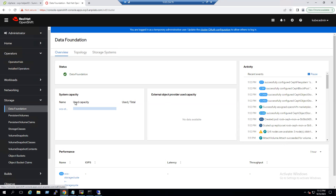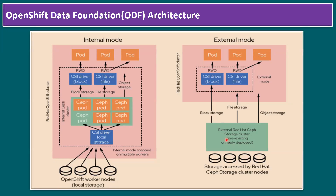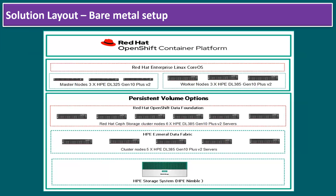This is the internal mode configuration — not external mode, since we do not have a separate console. In our later session, I will show how to deploy ODF in external mode. For production environments, Red Hat recommends using bare metal or physical servers. If you see a sample reference architecture, it is a completely bare metal setup within Red Hat OpenShift Container Platform, running on either Enterprise Linux or CoreOS across three master physical servers, which include HPE DL325 Gen10 Plus.